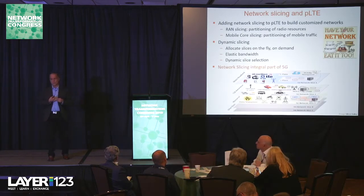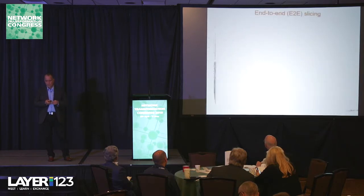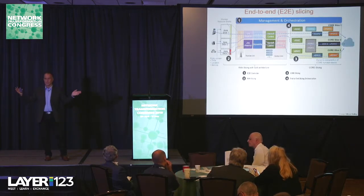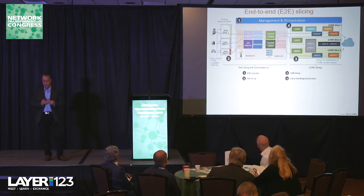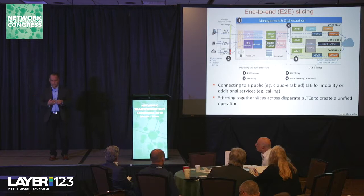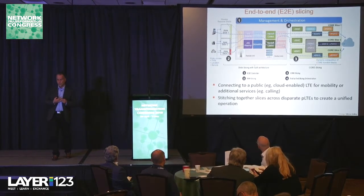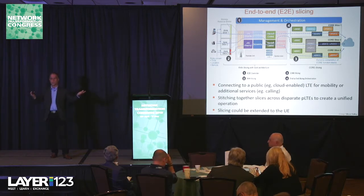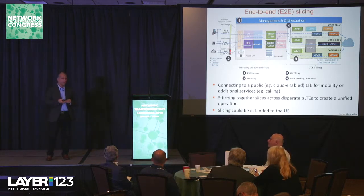Network slicing is baked into the 5G standard. What's always on our minds is how to achieve end-to-end slicing — you have RAN slicing on one side, mobile core slicing on the other, and you need some glue between the two. You may also want to connect to a public LTE network for mobility and calling. Slices that exist across geographically disparate private LTE sites create an interesting challenge — creating unified operations across them. A ride-sharing company like Lyft or Uber could create private LTE networks and stitch them together.